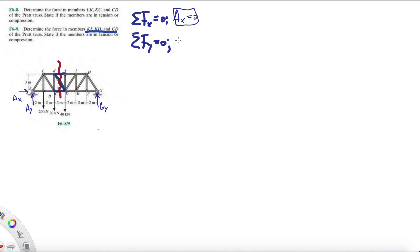In the y direction, we have Ay plus Gy, and then we have minus 20, minus 30, and then minus 40 equals 0. So it's telling you that Ay plus Gy equals 90 kilonewtons. So we're left off trying to figure out what Ay and Gy are.